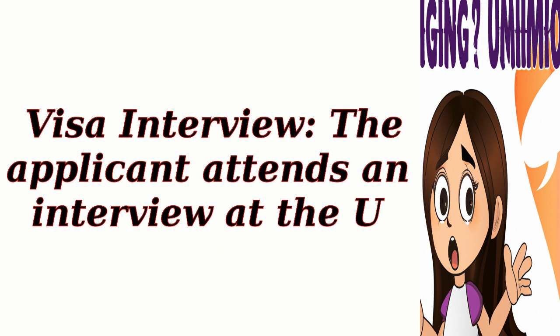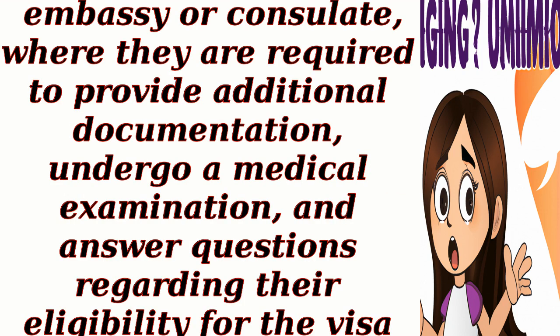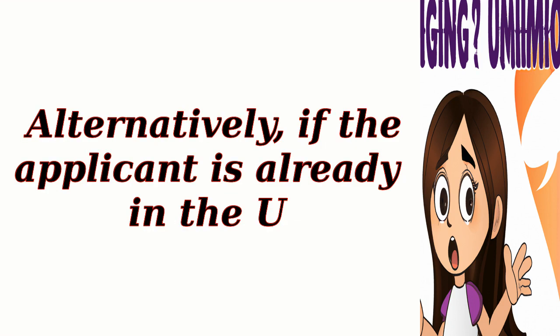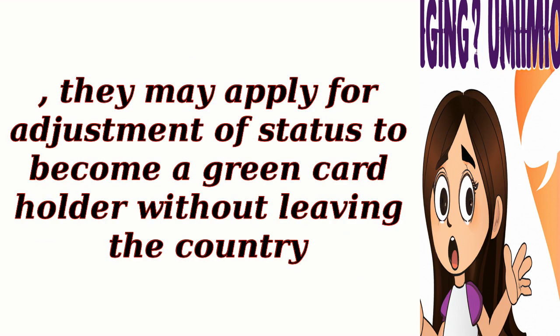Visa Interview. The applicant attends an interview at the U.S. Embassy or consulate, where they are required to provide additional documentation, undergo a medical examination, and answer questions regarding their eligibility for the visa. Visa Issuance. If approved, the applicant will receive an immigrant visa, allowing them to enter the United States as a lawful permanent resident. Alternatively, if the applicant is already in the U.S., they may apply for adjustment of status to become a green cardholder without leaving the country.